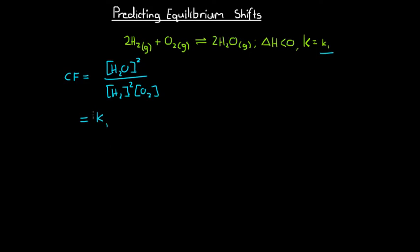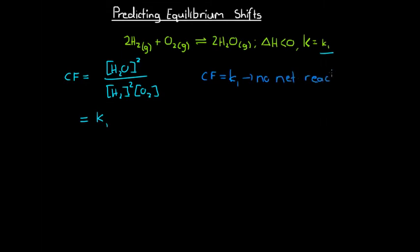If at the start the concentration fraction is equal to K, then we're going to see no net reaction occurring — the system is already at equilibrium, so we won't see any changes in the amount of any of our reactants or products.